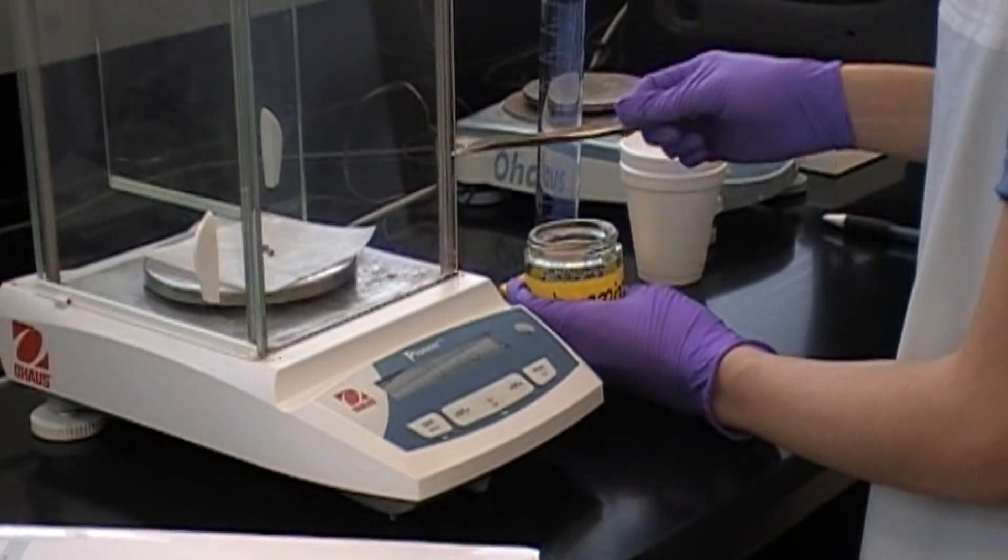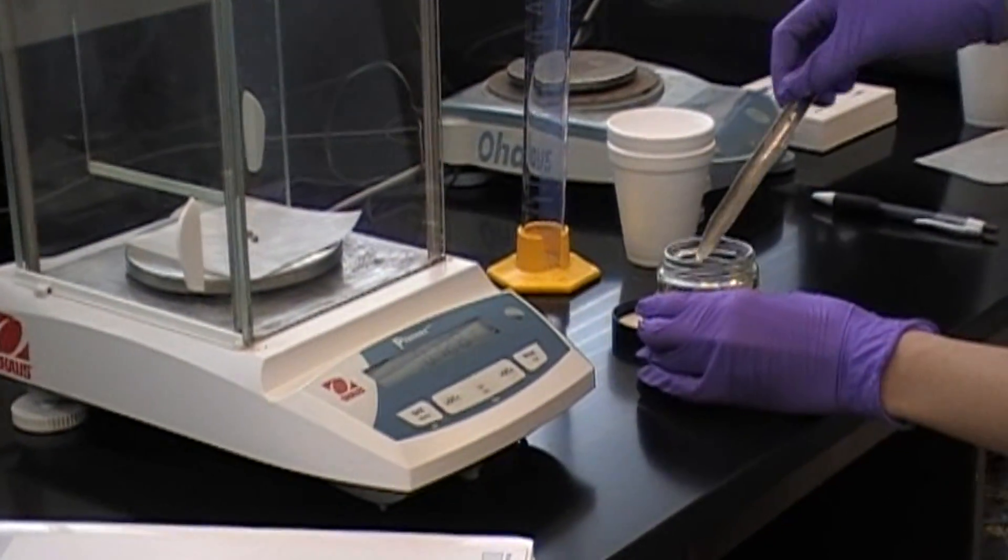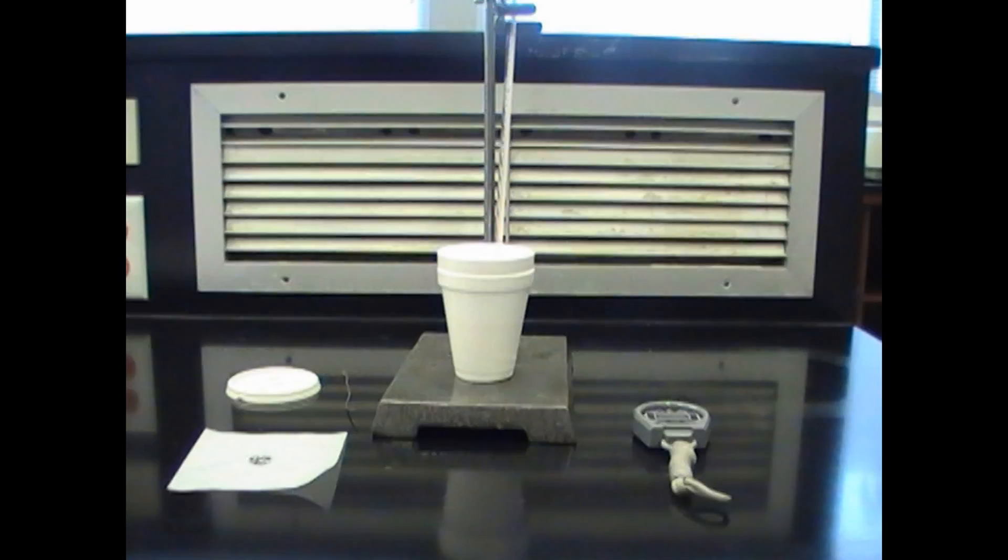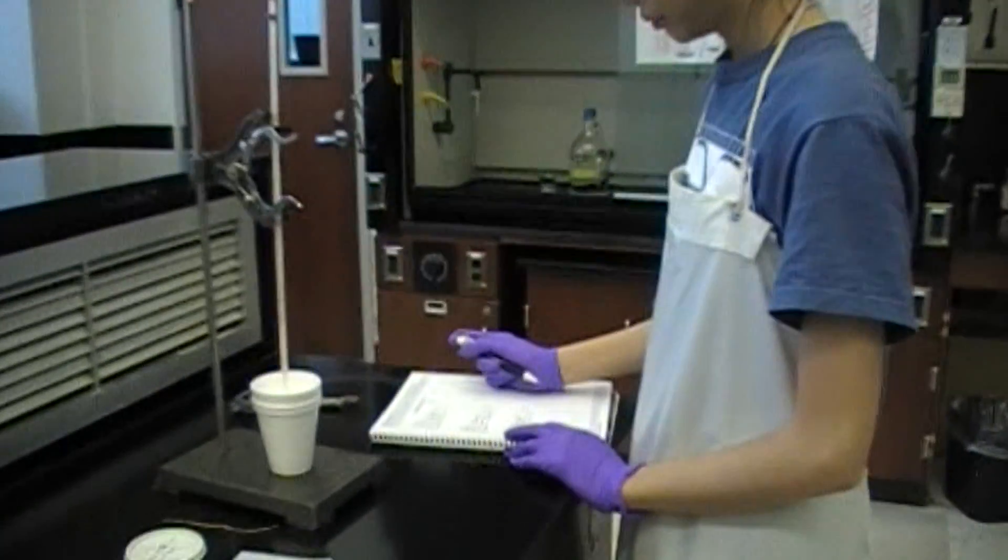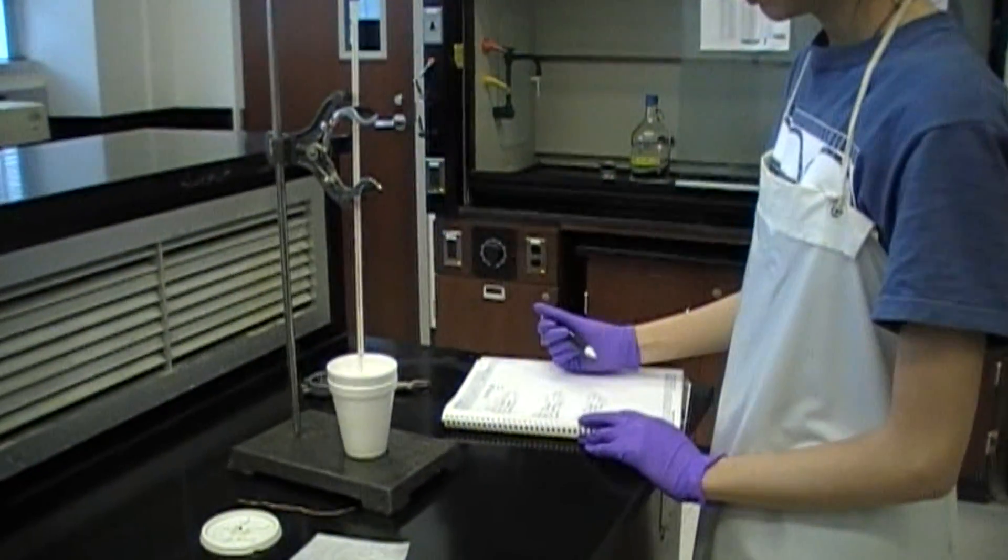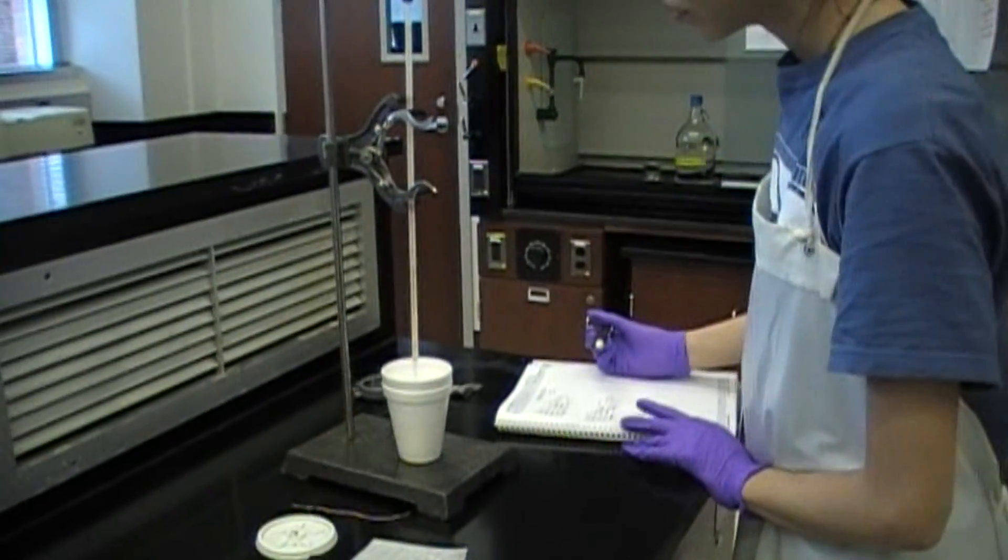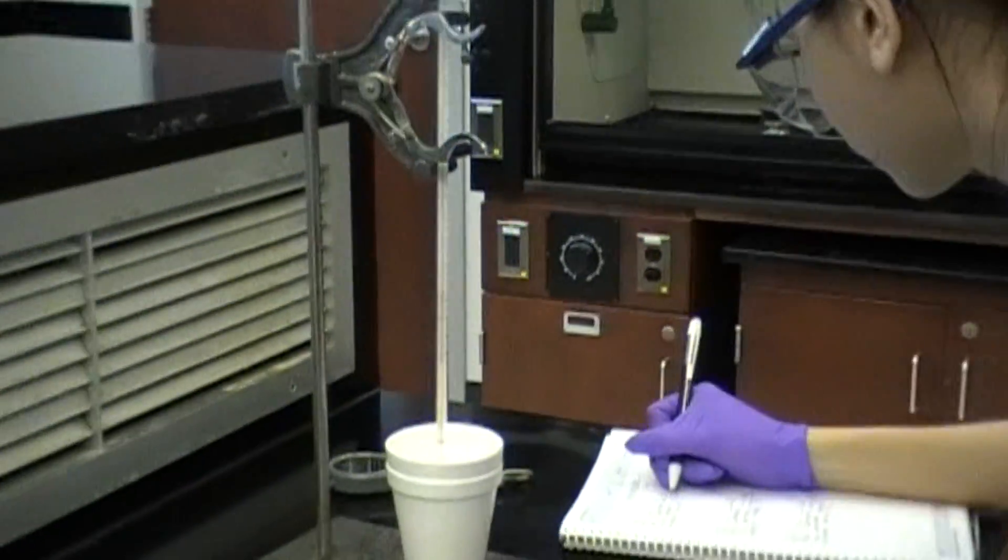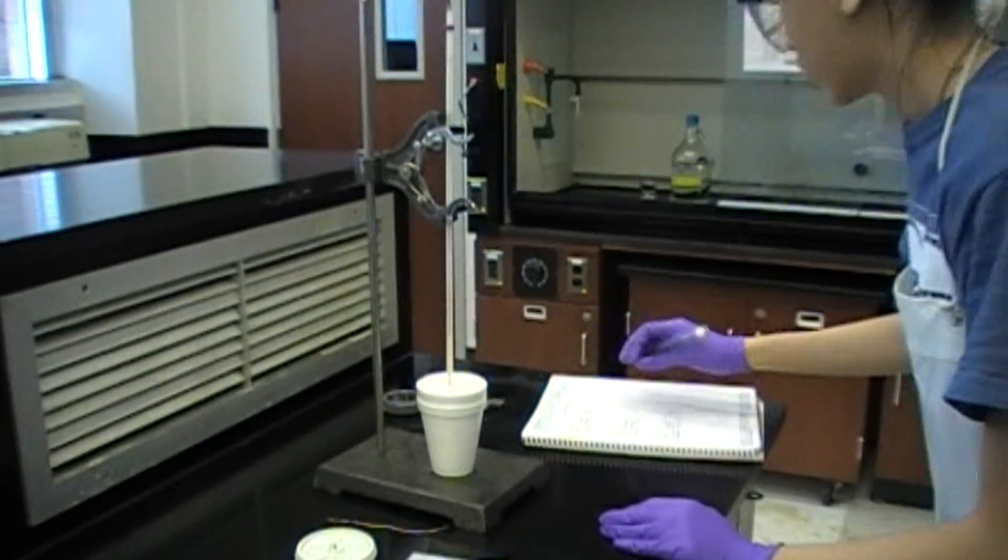Now, also pre-weigh your magnesium turnings. Once you have pre-weighed your magnesium turnings, record the temperature of your calorimeter, and wait five minutes, which will be the latent period. This will be your initial temperature.